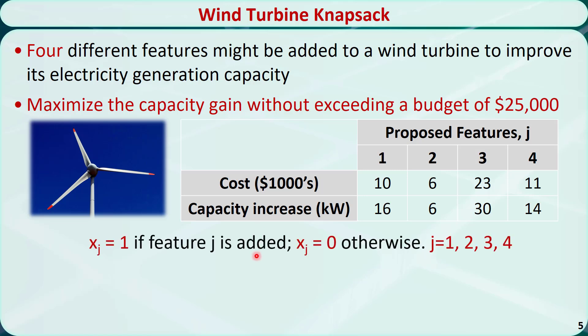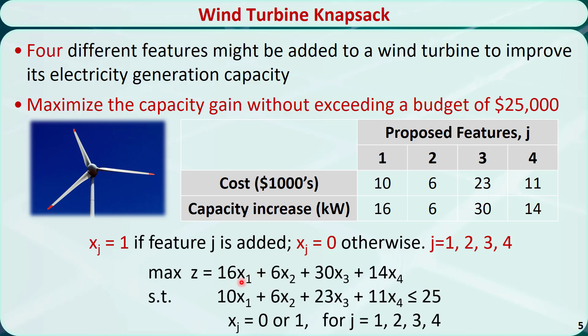To formulate this problem, we define xj equal to 1 if feature j is added, and xj equal to 0 otherwise. We try to maximize the total capacity gain, which is the objective function.